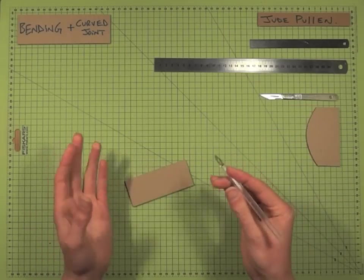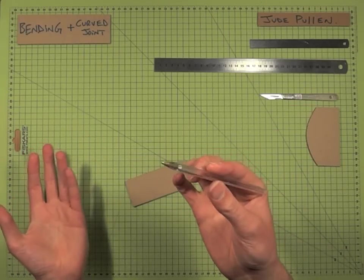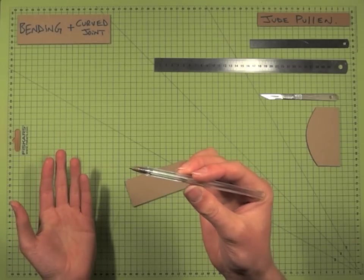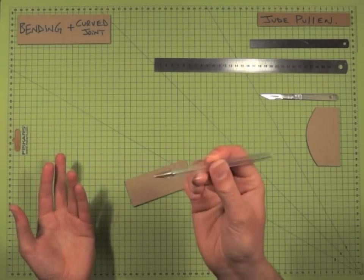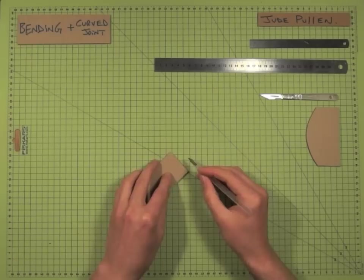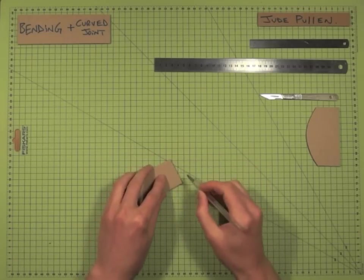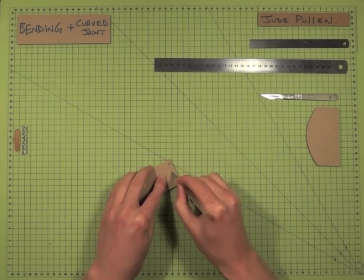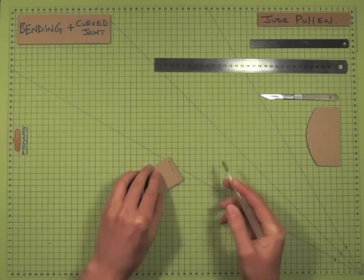You can use pretty much any blunt instrument you like, but I find that also good for creating a fold line is a biro that's run out. So if we just take that, and what we can do is damage it like so.